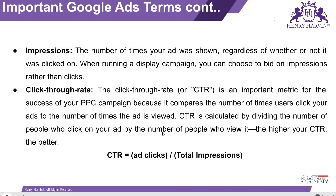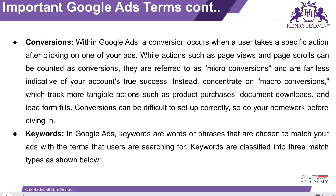CTR equals the number of clicks you received divided by the number of people who saw it — that gives you the click-through rate percentage. Conversion: the ultimate goal of every business, every marketer, or every creator. They want conversion — the final action they want a customer or user to take. This is conversion.